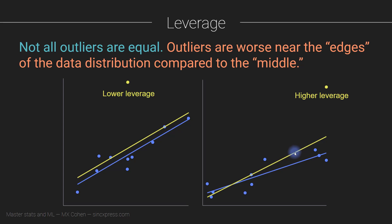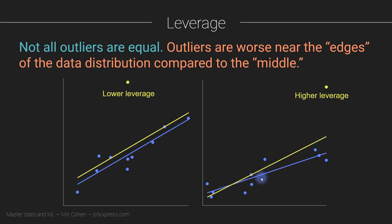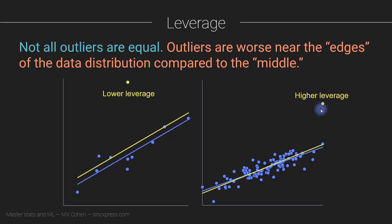The effect of an outlier on the results also depends on how much data you have. If you have a lot of data, the outlier is still going to affect the statistical model, but less so compared to when you have a smaller amount of data. So it gets a little bit subtle. It's not that all outliers are bad — it's that outliers definitely deserve some attention. Anytime you are analyzing a data set, you should always inspect the data for the possibility of outliers, and then decide how to deal with them.